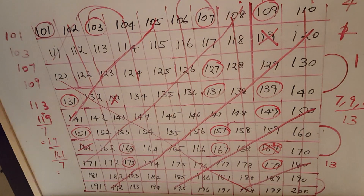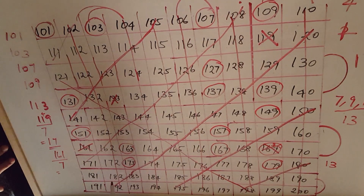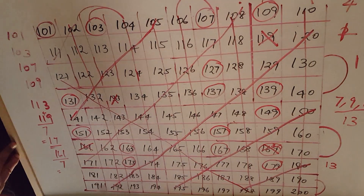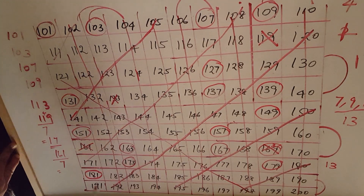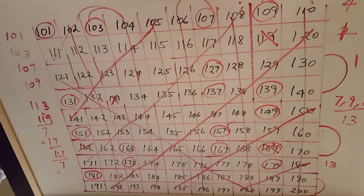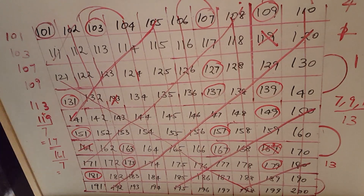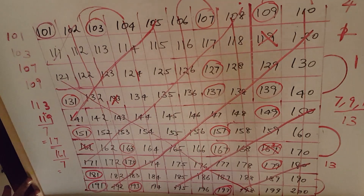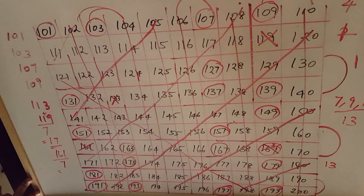In this range you see all numbers are striked out except 181. In the range 181 to 190, only 181 is a prime number. Then for 191 to 200: 191, 193, 197, and 199 — these four are not divisible by any other number, so they are prime numbers.